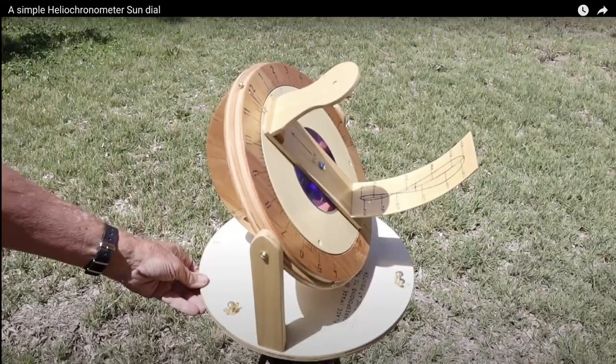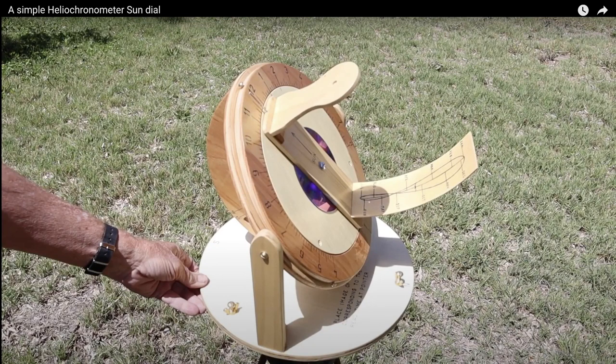Well now that we have a basic understanding of the equation of time and the differences of time by longitude I want to show you a rather remarkable instrument. One that I'm thinking about building myself. This is a special type of a sundial called a heliochronometer. And the reason that it's called a heliochronometer is that it is extremely accurate. And I'm going to show you the reason that it's so accurate.